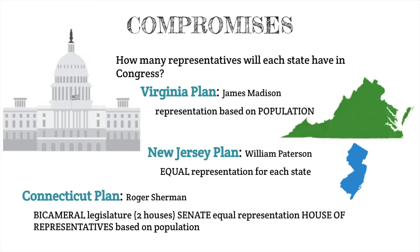During the debate about representation, there was a big question about how many representatives each state would have in this new Congress. Under the Articles, each state had one vote, and that plan wasn't exactly the best. James Madison from Virginia put forth what's known as the Virginia Plan, which said that representation in Congress should be based on population. This made sense because Virginia was a relatively large state — the larger the population, the more representatives, the more votes, and therefore the more power and influence in the government.